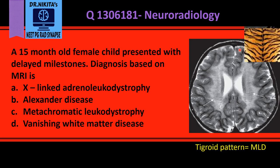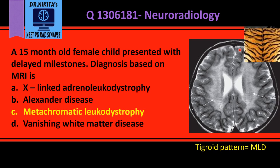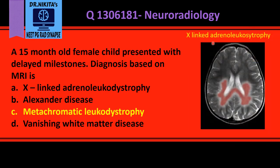This is the Tigroid pattern, which is seen in metachromatic leukodystrophy (MLD), so the answer is MLD. In X-linked adrenoleukodystrophy, the letter X comes toward the end of the alphabet — meaning it is posterior — so X-linked adrenoleukodystrophy affects the posterior parietal and occipital white matter and the posterior corpus callosum. X-linked involves only posterior white matter, while metachromatic leukodystrophy affects bilateral symmetrical anterior and posterior white matter.